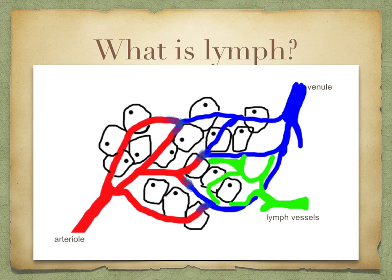Not all the tissue fluid returns to plasma in blood capillaries. About one-tenth of it enters a separate system of capillaries called lymph capillaries. Once inside these, the tissue fluid is called lymph. You can see the capillary bed with the cells, and the excess tissue fluid is drained into the lymph vessels, or lymph capillaries, which is represented by the green there.